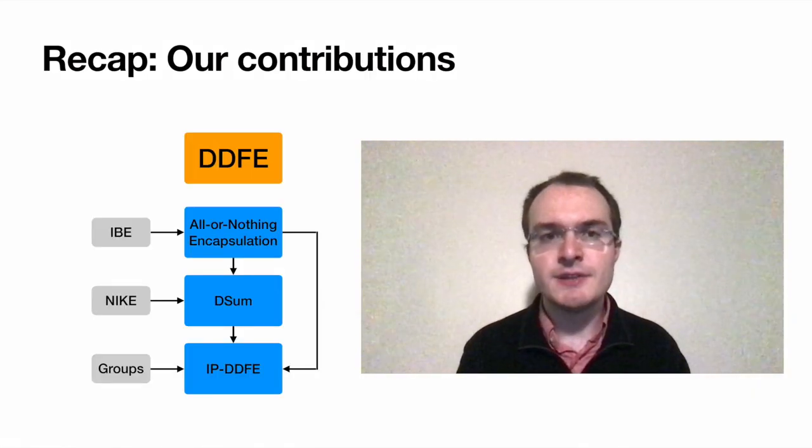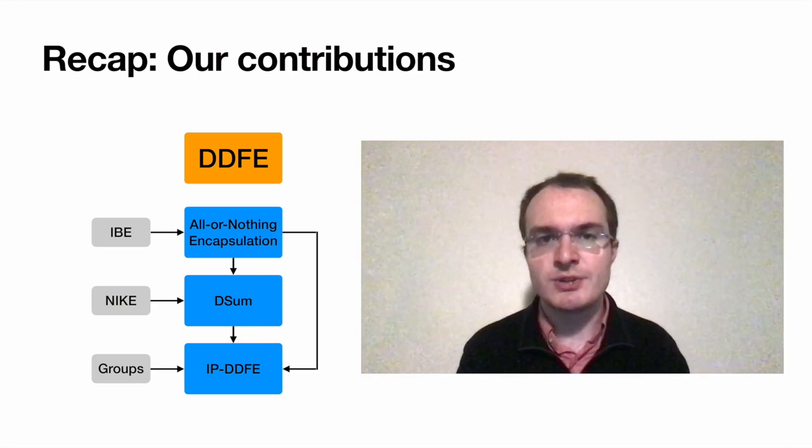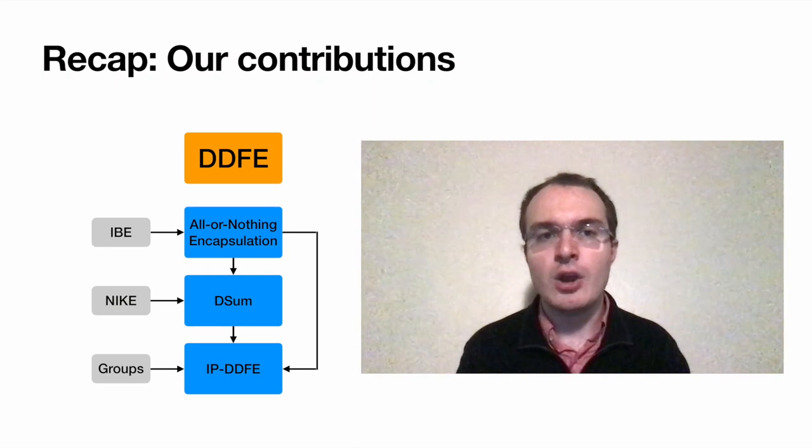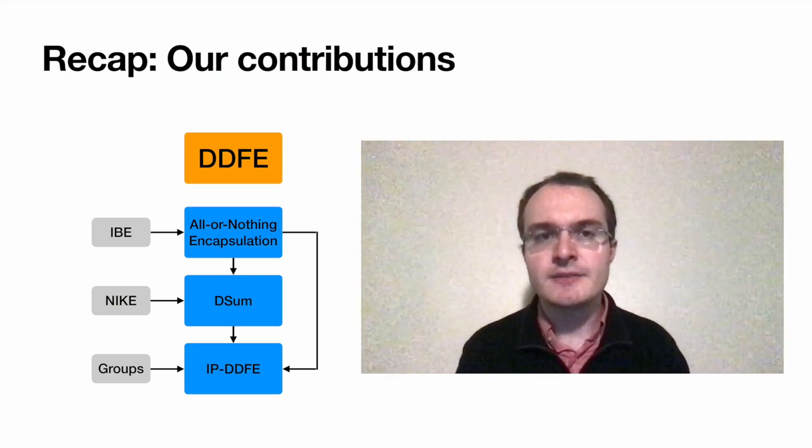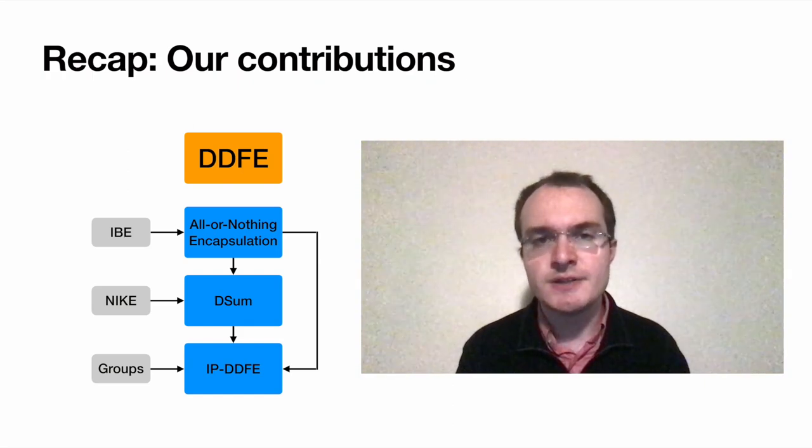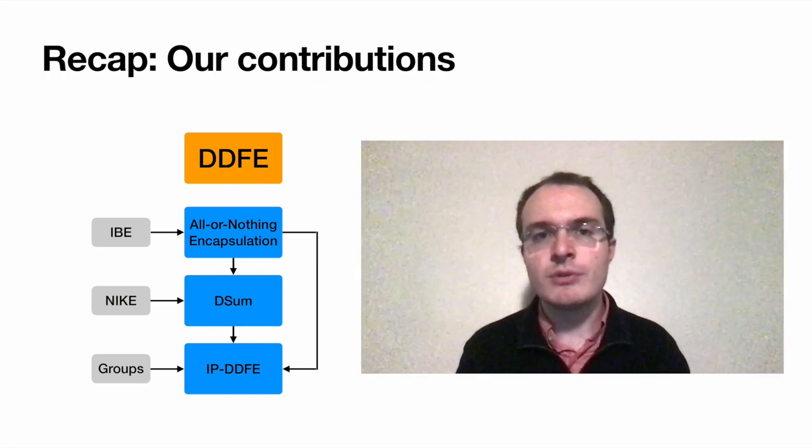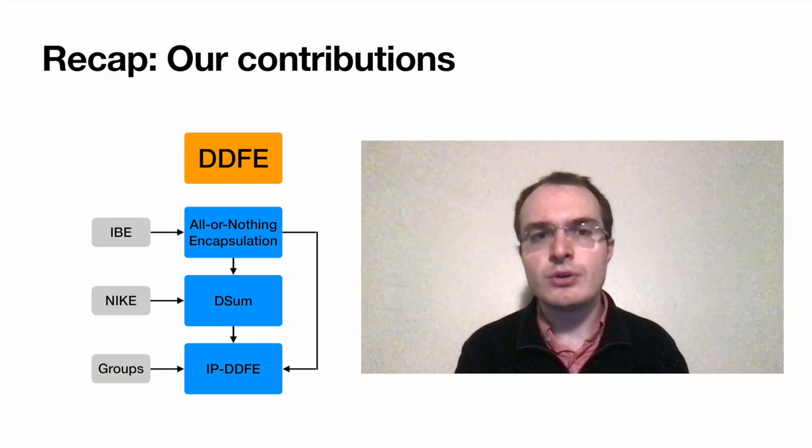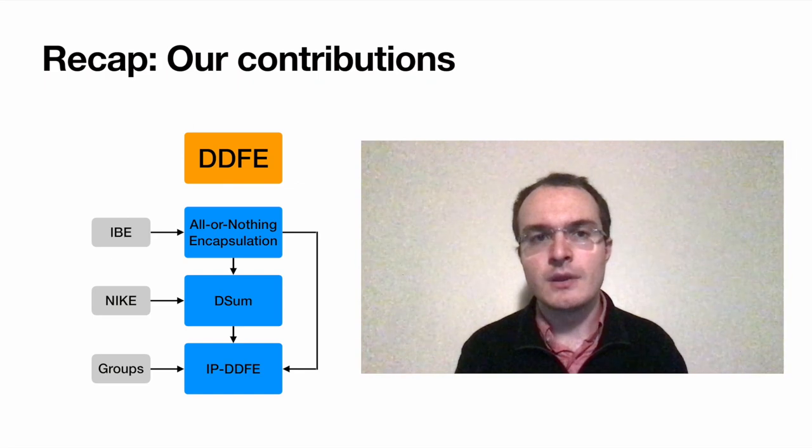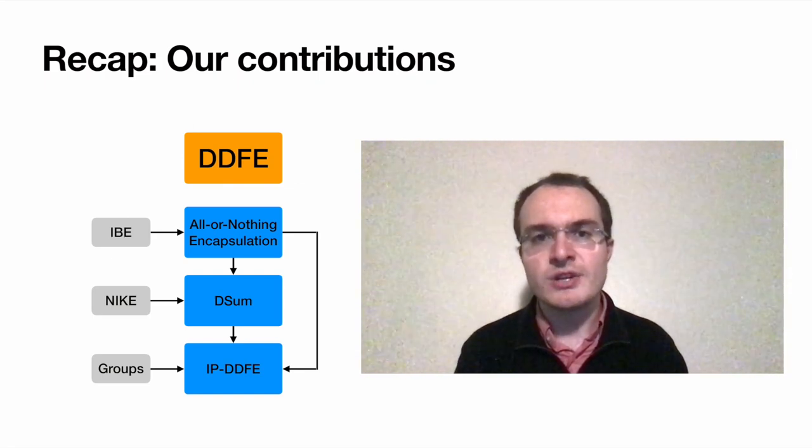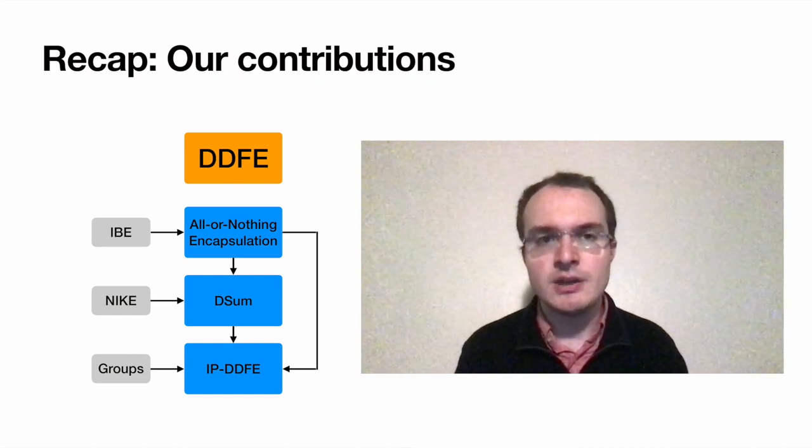Allow me to conclude by recapitulating our main contributions. First, we defined dynamic decentralized functional encryption, which is a framework for describing a variety of crypto systems that enable a server to perform controlled computations on data from a variety of clients. Next, we defined three interesting DDFE functionalities, for which we also provide constructions. All-or-nothing encapsulation is an extremely helpful building block for achieving a natural notion of security in our other functionalities, and we give a generic construction thereof from identity-based encryption, with a succinct variant from bilinear maps. We then define decentralized sum, for which our construction makes generic use of AONE and of non-interactive key exchange.